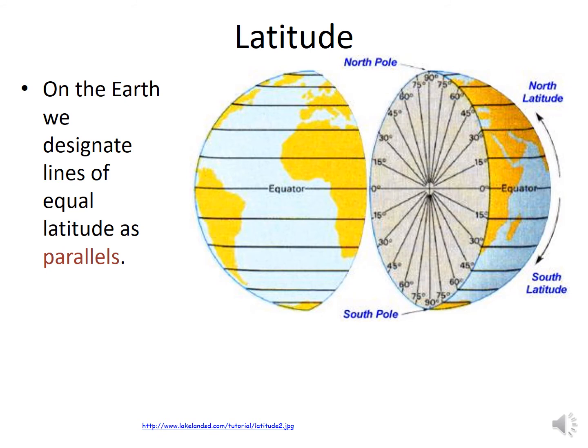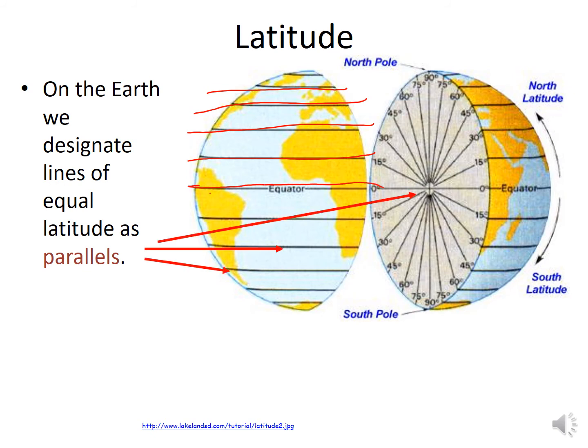On Earth, we designate lines of equal latitude as parallels. As you notice, parallels go the same direction and are evenly spaced from each other. Just like a road, they're spaced out but going the same direction — so all the lines you see are parallel lines.